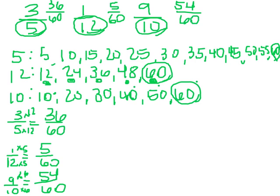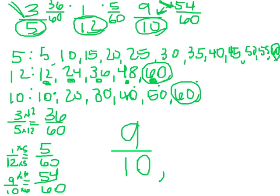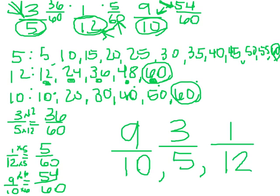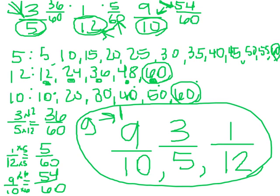Now that they're all in sixtieths, I can easily put these in order. My biggest one is the one with fifty-four on top, so nine-tenths is my greatest. My next greatest out of thirty-six and five is thirty-six, which was equivalent to three-fifths. So next I'd write three-fifths. That means my smallest one would be the five sixtieths, which was equivalent to one-twelfth. So I've compared all three fractions and put them in order from greatest to least: nine-tenths, three-fifths, and one-twelfth.